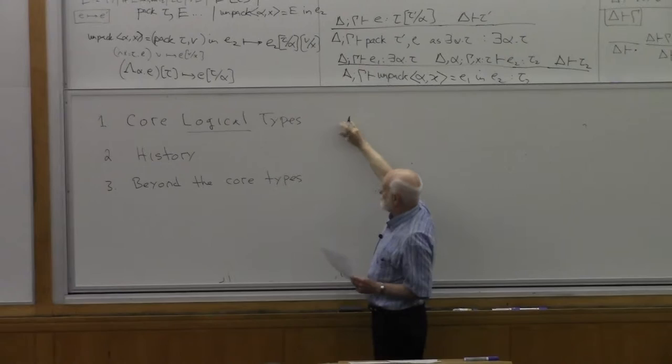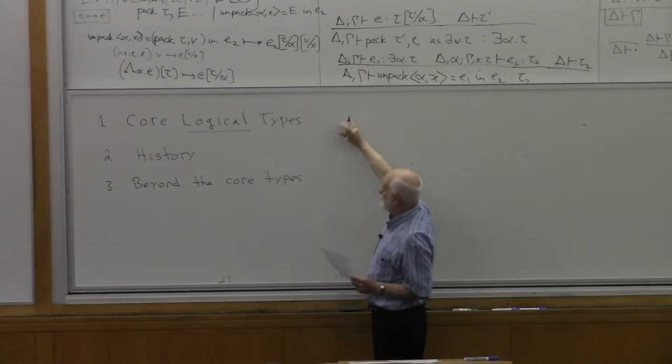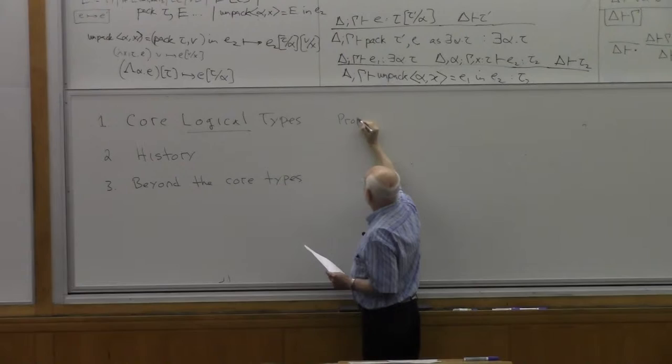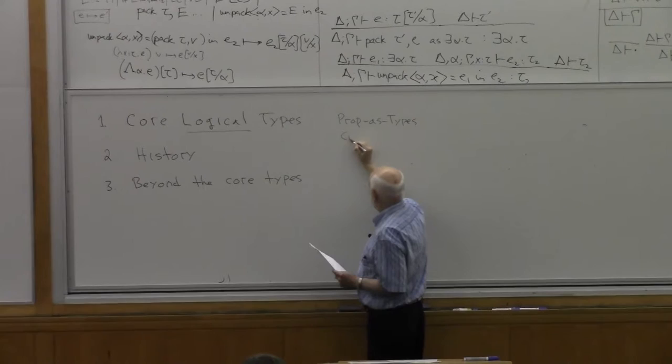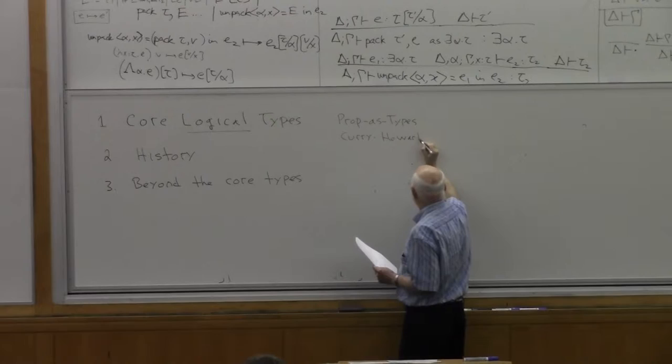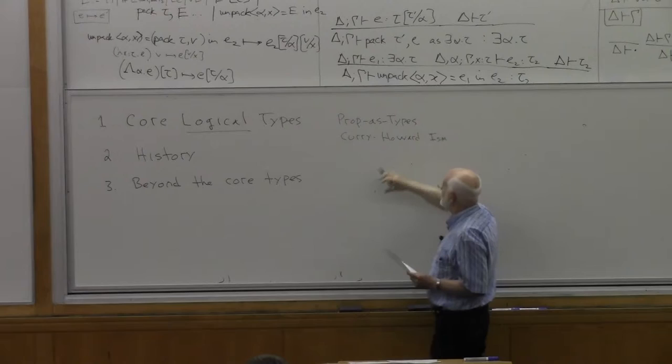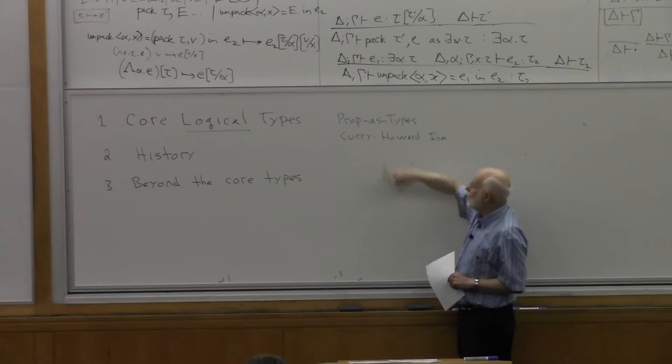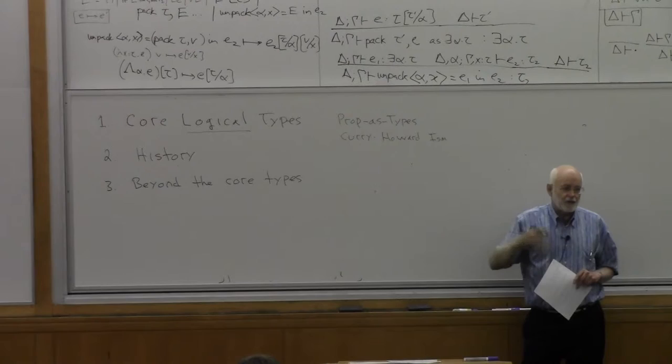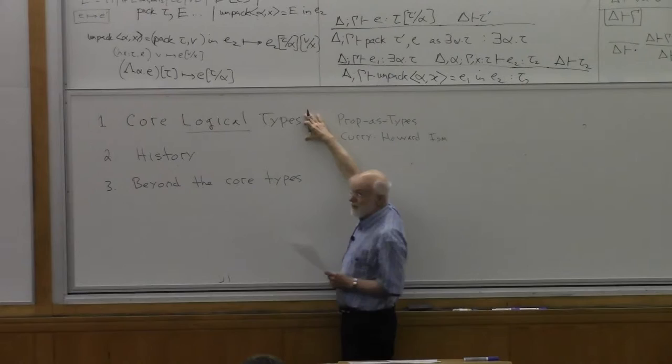So you've got these core logical types, but indeed, the core ones are the center of this idea of propositions as types, right? It's also called, it goes by many names, Curry-Howard isomorphism. That's my least favorite name, because it's not really an isomorphism, but that's okay.